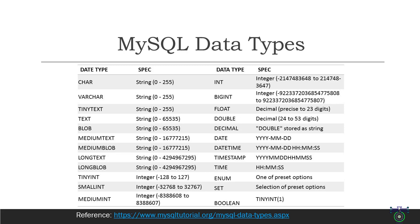The date data type stores dates in the format YYYY-MM-DD and takes up three bytes of storage. The datetime data type stores date and time in the format YYYY-MM-DD HH:MM:SS and takes up eight bytes of storage. The timestamp data type also stores date and time but only within a range from January 1st 1970 to January 19th 2038, and takes up four bytes of storage. So the timestamp has a limited range and you cannot go beyond that.